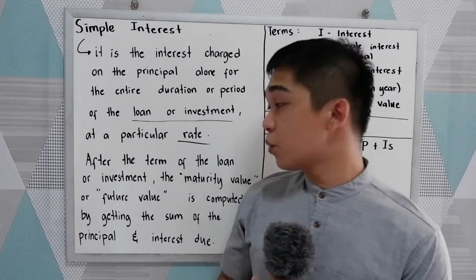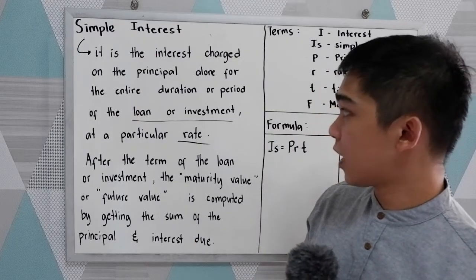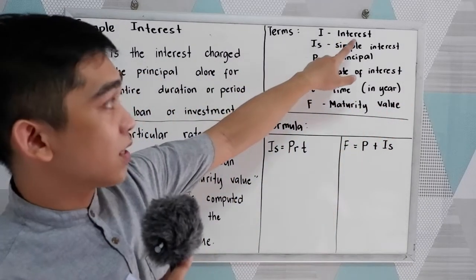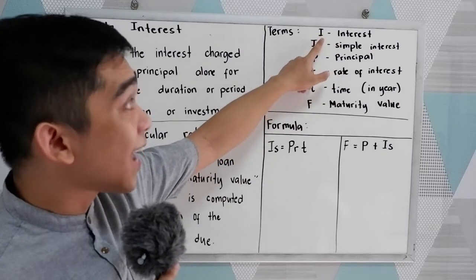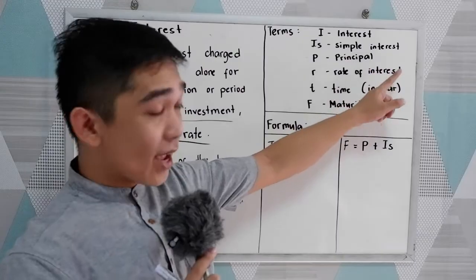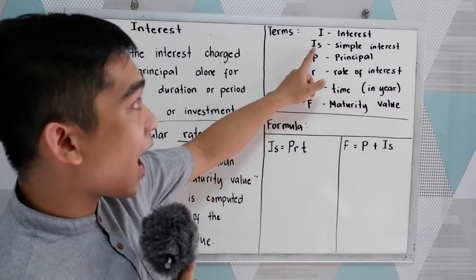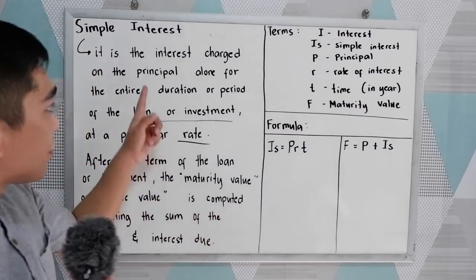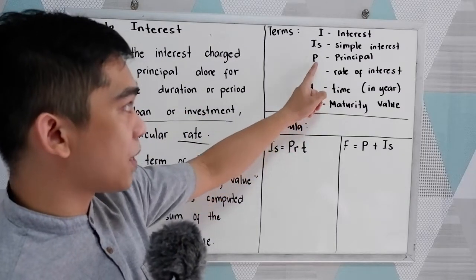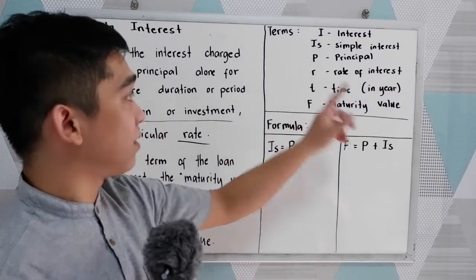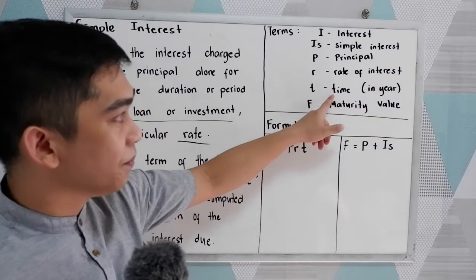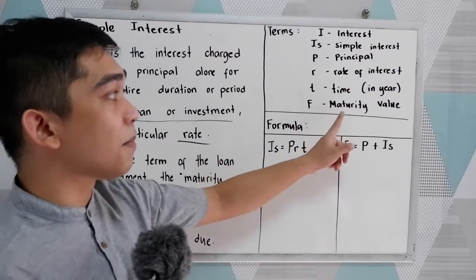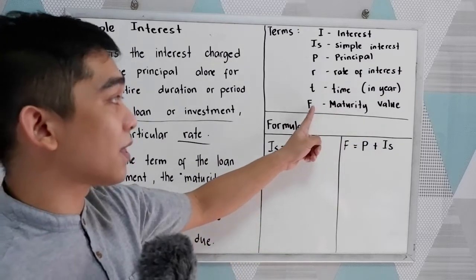In our definition, we encounter different terms that we're going to use in our formulas. We have the interest, abbreviated as IS (capital I, small letter S) for simple interest. We also have the principal, abbreviated P; rate of interest, abbreviated r; and time or period in years, abbreviated t. And the maturity value or future value, abbreviated as capital F.